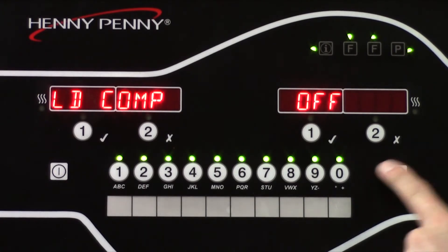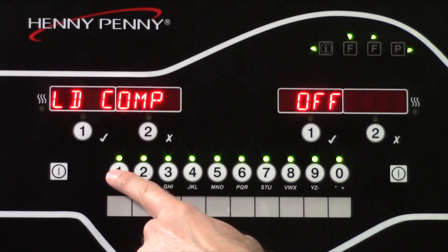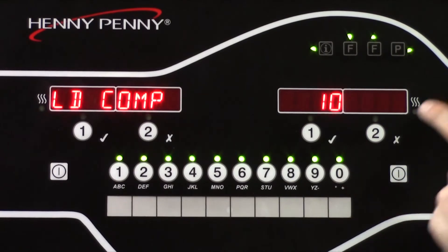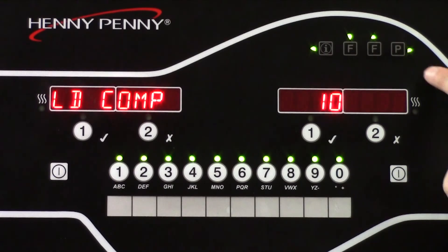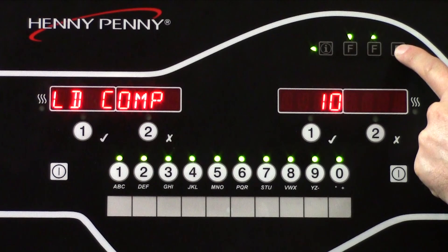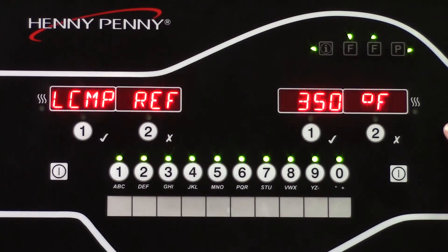Average load compensation would be set to 10. This is the default of the fryer, and normally you don't have to change this. Load compensation ensures that if I cook a small batch versus a large batch of product, my product comes out to the same doneness. 10 is a normal setting for this. The lower the number, the less load compensation. The higher the number, the greater load compensation. The load compensation reference, usually I recommend that this is set to the set point temperature. This is a standard setting and normally doesn't have to be changed.